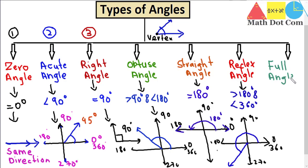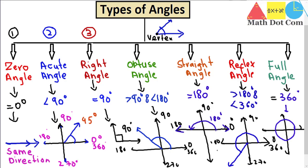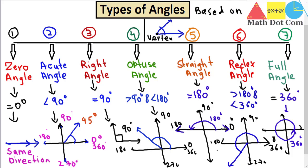The last type is the full rotation or full angle. The full angle has a measurement equal to 360 degrees. It's called a full angle because if you start from zero and take a complete round back to the same position — just like forming a circle — that gives a complete rotation of 360 degrees. These are the seven different types of angles based on measurement, not on rotation or pairs of angles. That's all from today's lecture, thank you.